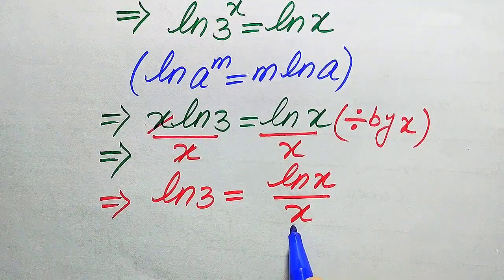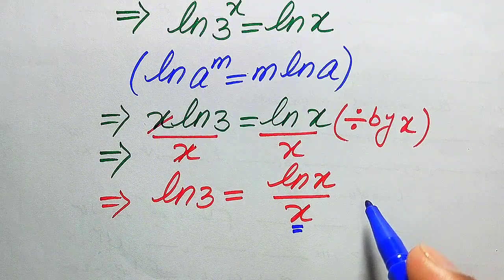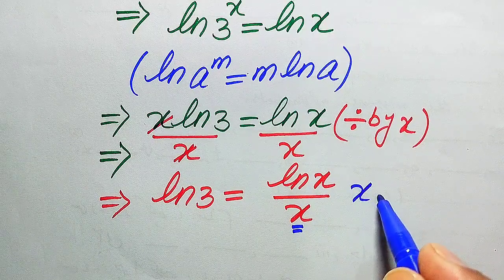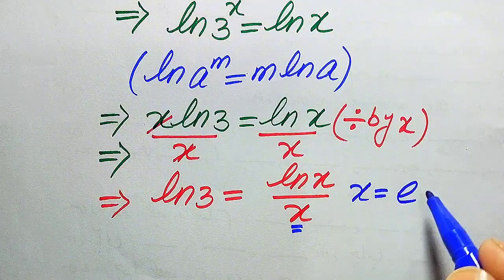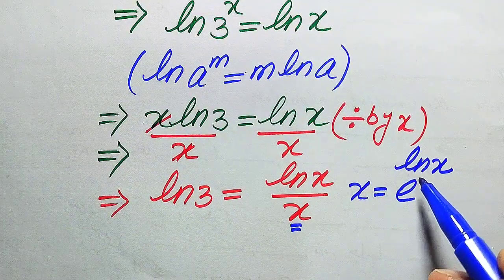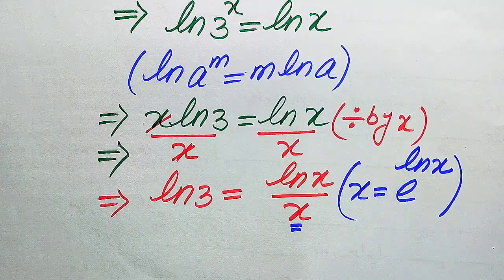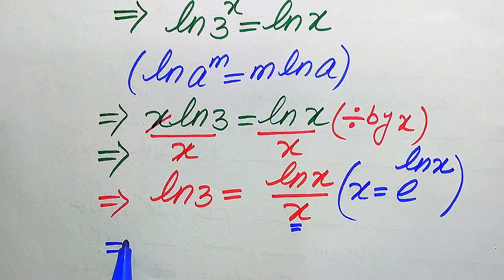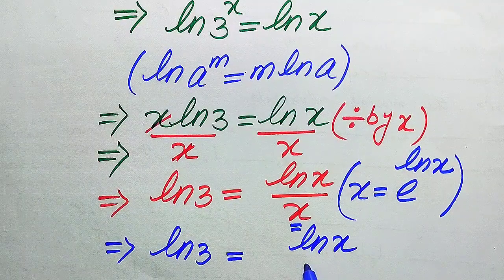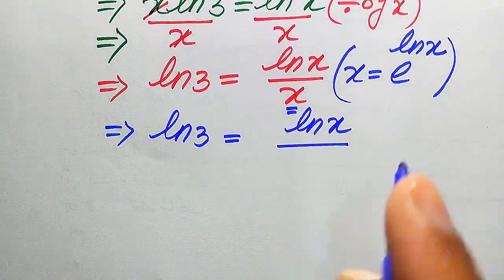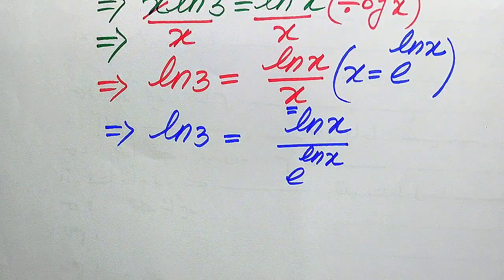Now, focusing on this X: if we apply log and antilog at the same time on X, it can be written as X = e^(logX), because log and e cancel each other and we get X again. So we rewrite this as log(3) = log(X) / e^(logX).